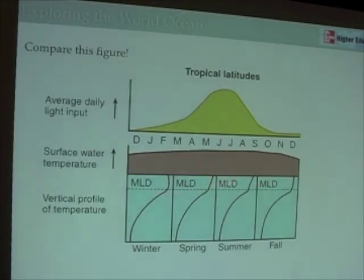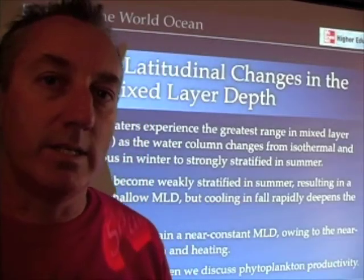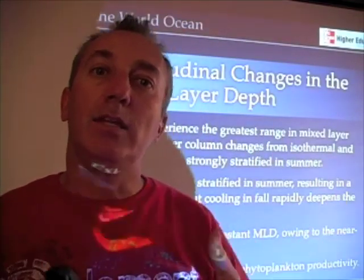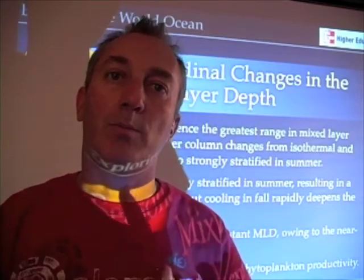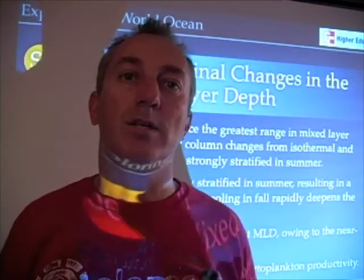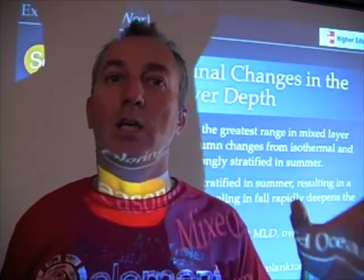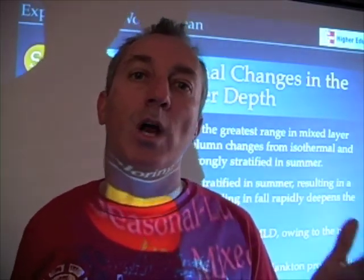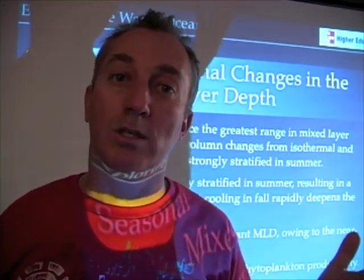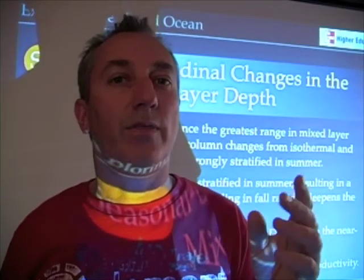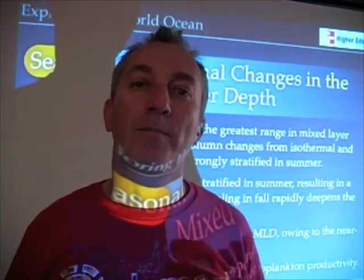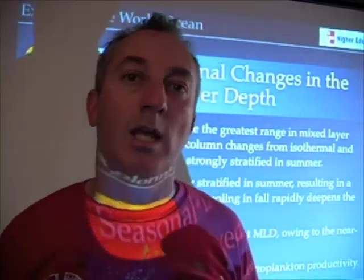To summarize: we see differences in the mixed layer depth caused by seasonal changes in heating in the three different regions of the world ocean — the temperate zone, the tropical zone, and the polar zones. Changes in mixed layer depth that occur as a result of seasonal heating and cooling are really going to be responsible for the kinds of productivity we see in these different ocean types. In fact, it even determines the color of the oceans — when you think of Hawaii, you think of very clear blue waters, which is typical of most tropical regions.